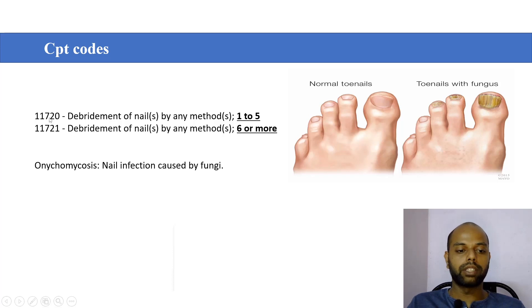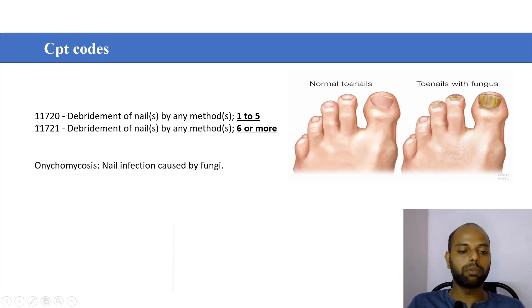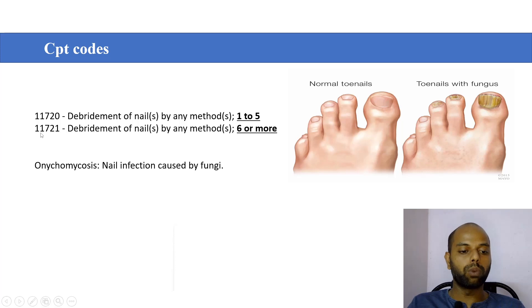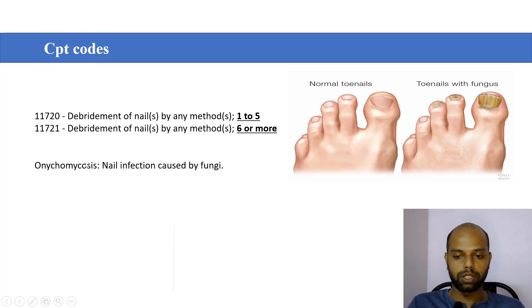For debridement of nails there are two CPT codes: 11720 and 11721. When the provider debrides 1 to 5 nails we have to code CPT 11720. When the provider debrides 6 or more nails we have to code 11721. Most providers perform nail debridement because of onychomycosis.